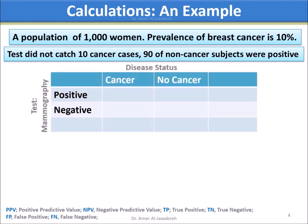First, make a 2x2 table for test versus disease. Now, fill in the table starting with a total of 1,000. In the cancer column, knowing that the prevalence of cancer is 10%, the cancer cases will be 100 out of 1,000.